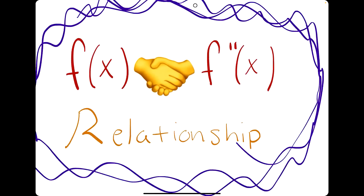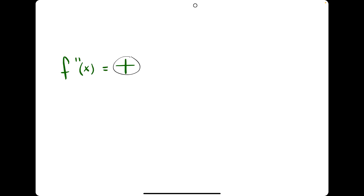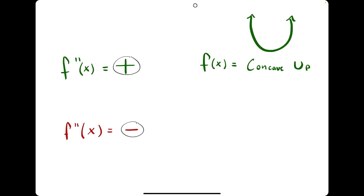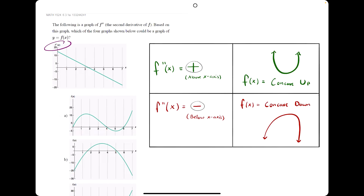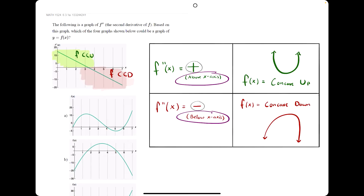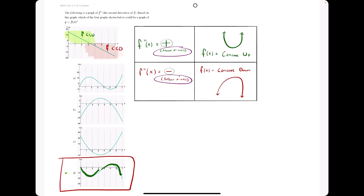F of x to f double prime relationships. When the second derivative f double prime is positive, the original function f will be concave up. When f double prime is negative, f of x will be concave down — equivalently, above the x-axis means concave up, below means concave down. In this problem we're given the graph of f double prime and must identify the graph of f. F double prime is above the x-axis from the start until just after 3, then switches to below. So f should start concave up and then change to concave down. That is option D.